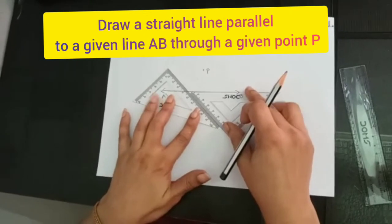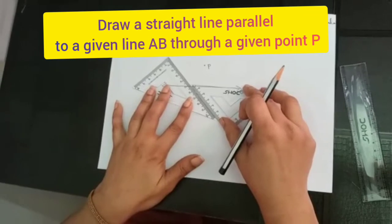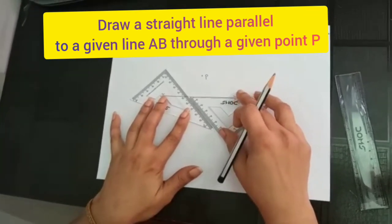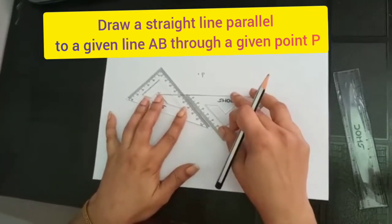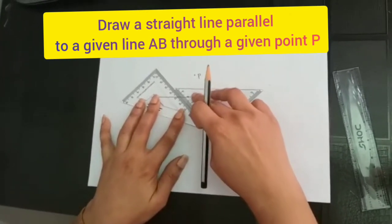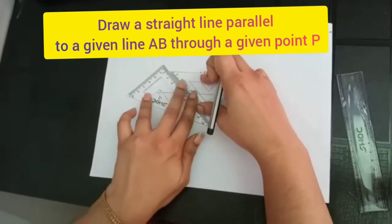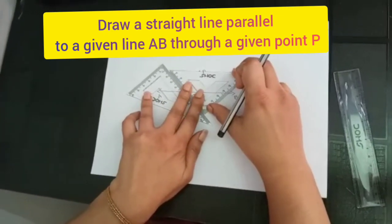Adjust the position as needed. Drag the set square until it touches point P, then keep the set square firmly in place.